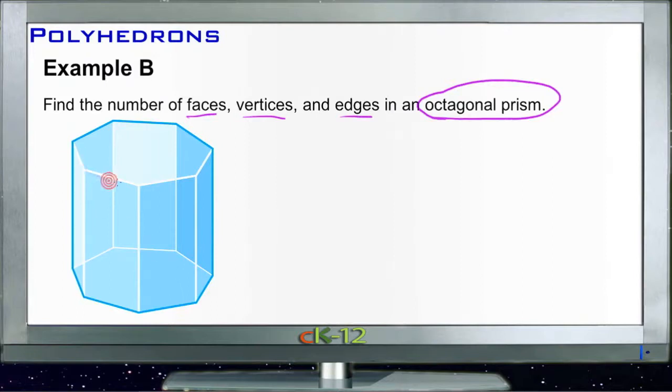We have one, two, three, four, five, six, seven, eight around each, which means that for faces we'll have eight faces around the outside of the shape plus the top and the bottom, which means we should have a total of ten faces.